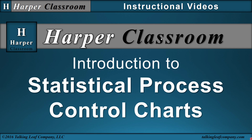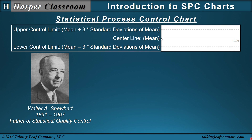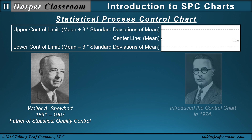The introduction to process control charts begins with Walter A. Shewhart, who has been called the father of statistical quality control. A significant contribution of Walter A. Shewhart is the process control chart, which he introduced in the 1920s while working at Bell Labs in Schenectady, New York.